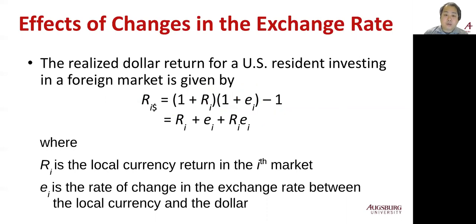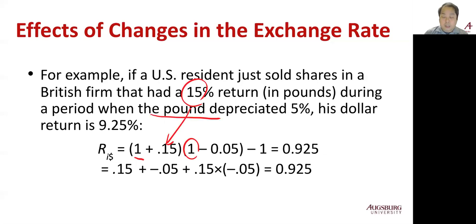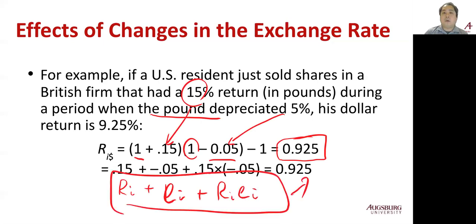Plugging into the formula with an example: if a US resident just sold shares in a British firm that had a 15% return in pounds during a period when the pound depreciated 5%, the dollar return is 9.25%. That's (1 + 15%) times (1 − 5%) minus one, which equals 9.25%. It's lower than 15% because of the depreciation in the pound. You get the same result using RI plus EI plus RI times EI.